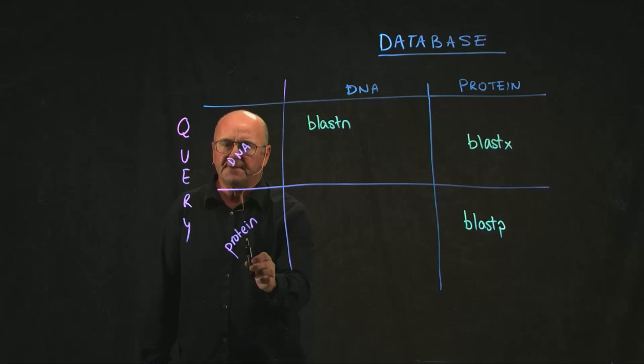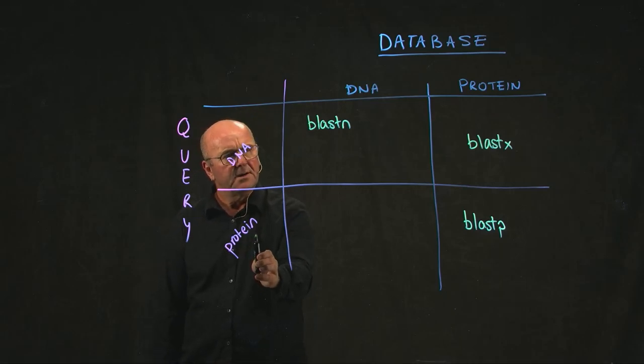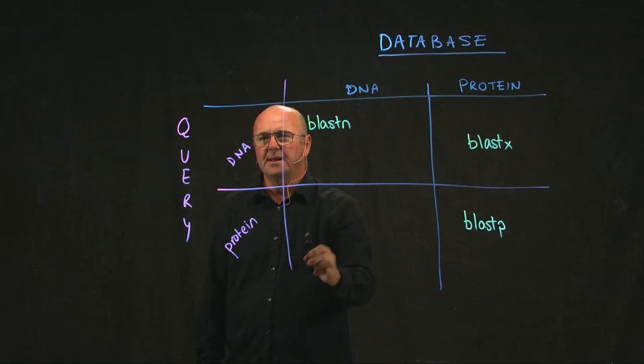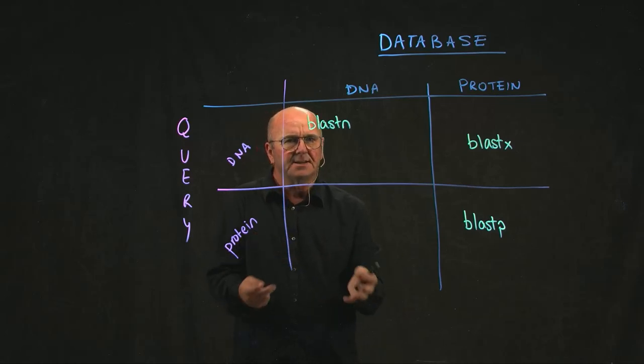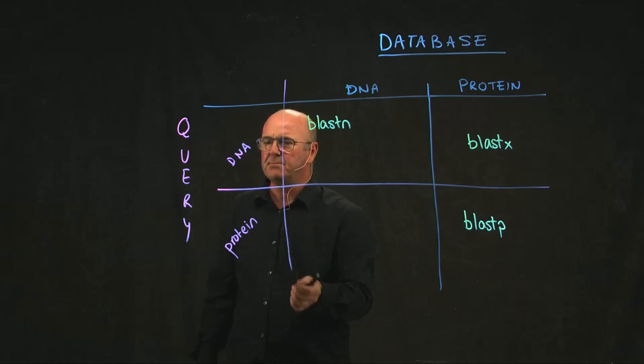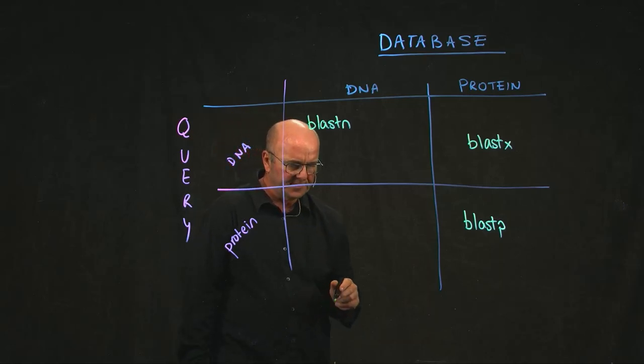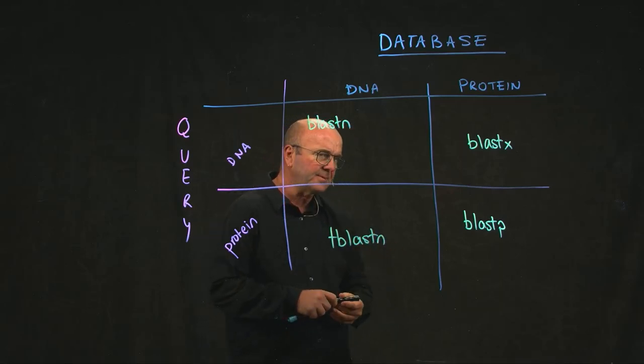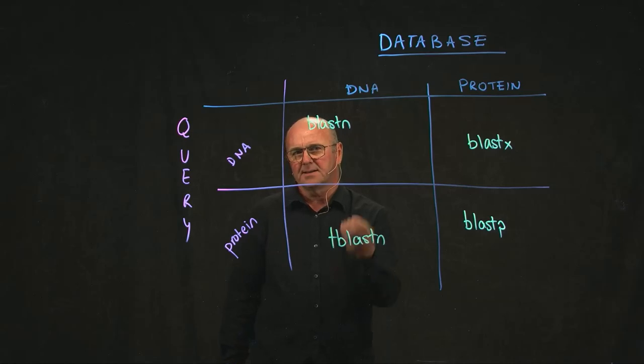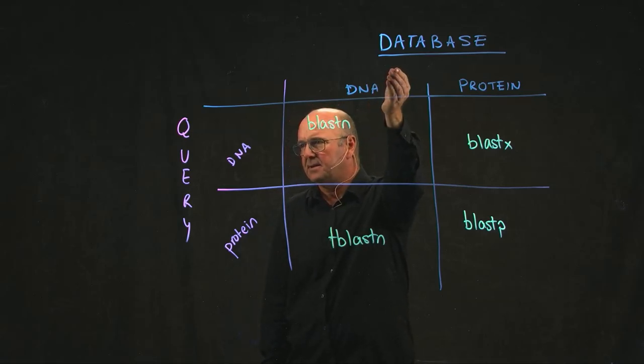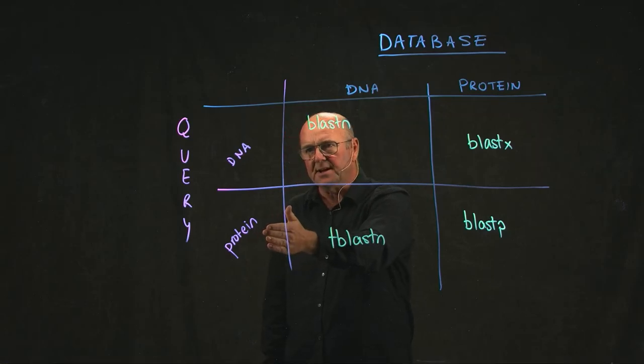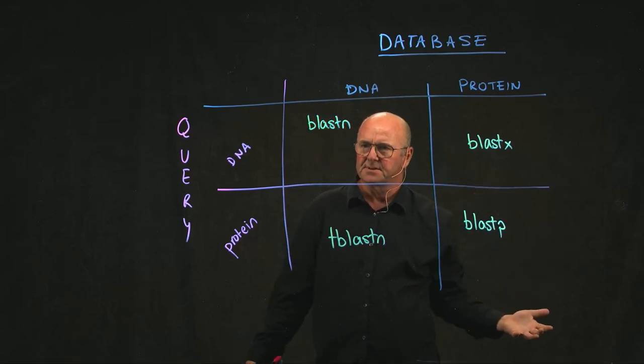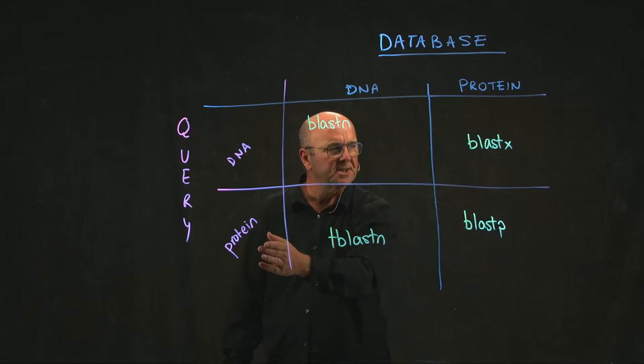Similarly, if we provide a protein query, what we could do is translate all of our database and say, in all of our database, in all six reading frames in our database, which one matches best to our protein query? That algorithm is called TBLASTN. But generally speaking, our database is really big. That means we're going to have to take our database and translate it into all six reading frames before we can compare it to our protein. So this is even slower.